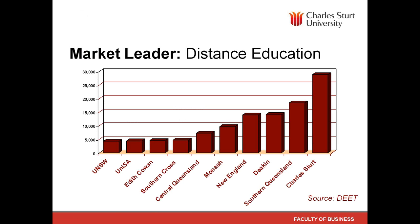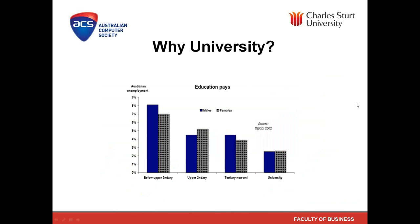I mentioned distance education earlier. That graph indicates our distance education enrolment compared to other universities in Australia. You can see Charles Sturt is showing over 25,000 students — the next closest is Southern Queensland, followed by Deakin and New England. Compared to other universities in Australia, we are well ahead when it comes to distance education provision. It's something that we're very good at.